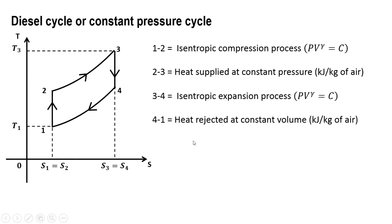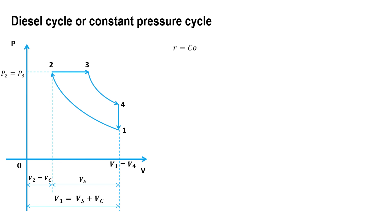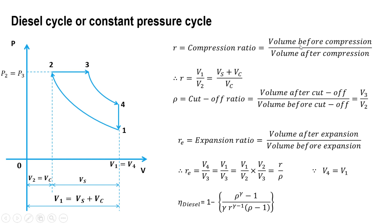R is known as the compression ratio — the ratio of volume before compression to volume after compression, that is V1 upon V2. We know that V1 equals Vs plus Vc, and V2 is the clearance volume Vc. The cutoff ratio Rho is the ratio of volume after cutoff V3 divided by volume before cutoff V2, so Rho equals V3 upon V2.